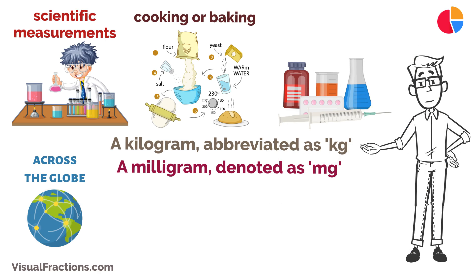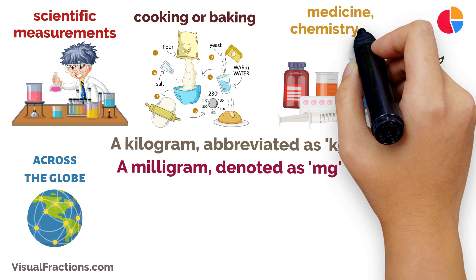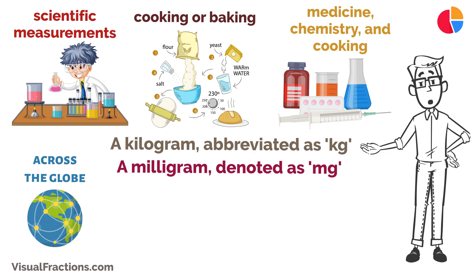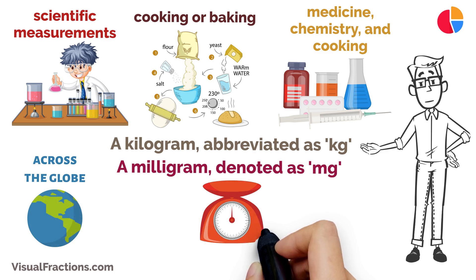It's used extensively in fields like medicine, chemistry, and cooking, where high precision is required. Here's the key conversion factor: one kilogram is equal to one million milligrams.